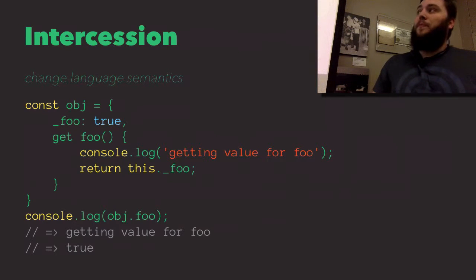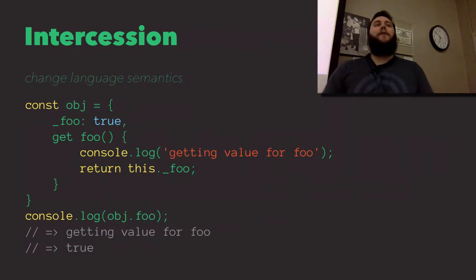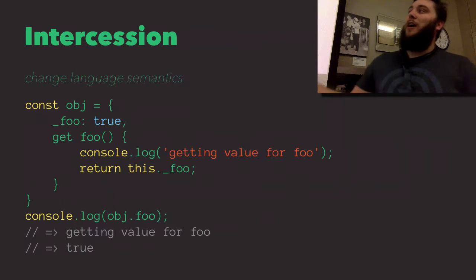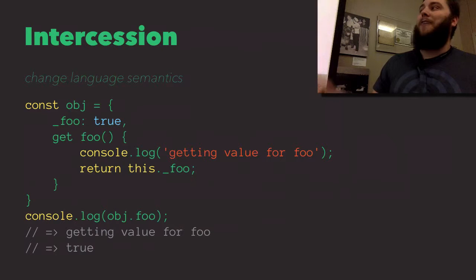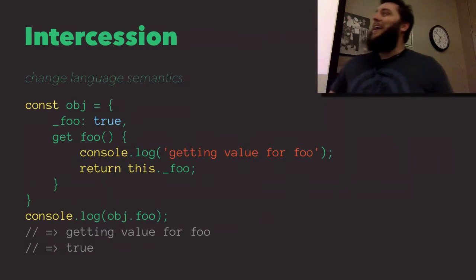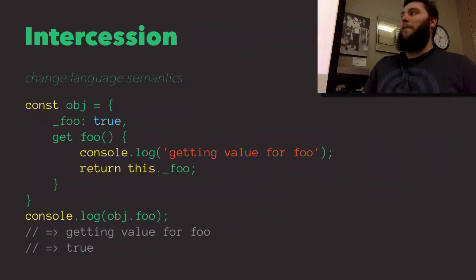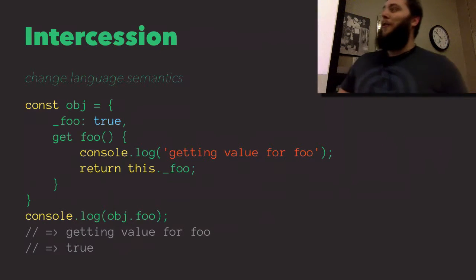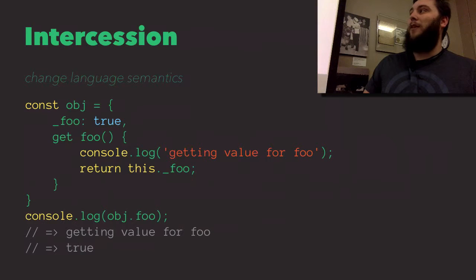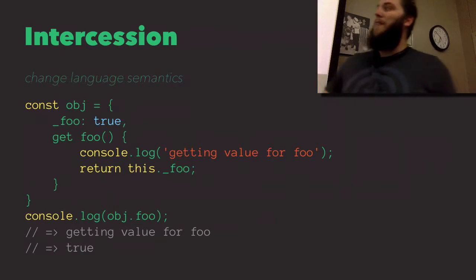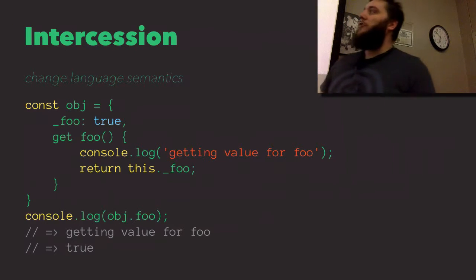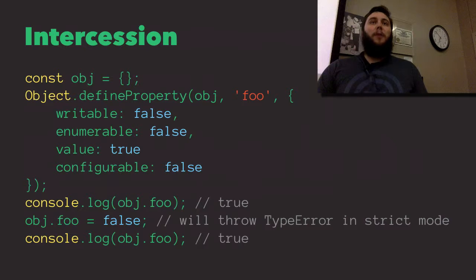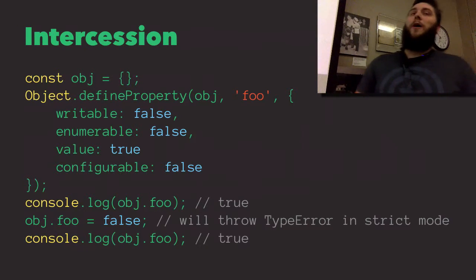Finally, intercession — changing language semantics, so changing the behavior of what's actually happening when you run your code. An example is ES5 getters. If I use a get method set up for the property foo, I can cause it to do something other than just return the value of foo. In this case, I have it return the value of _foo and log something out. So when I run this code and get the value of foo and log it, first it calls my console.log saying I'm getting the value for foo, then logs out the value, which is true. I'm changing the behavior — the way the language works.